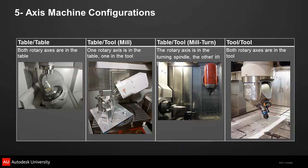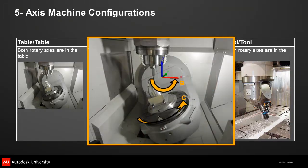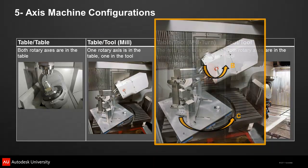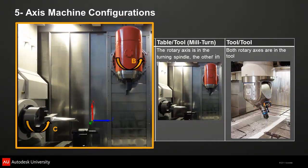Let's take a look at some common machine configurations. In the first example, the two rotary axes are located in the table — the B-axis tilts and the C-axis rotates the part, while linear motion is handled by the milling head. In the second example, the table still rotates in C, but the tilt is in the tool. On a mill-turn machine, the turning spindle becomes the C-axis to rotate the part, and the tilt of the tool is controlled by the B-axis.